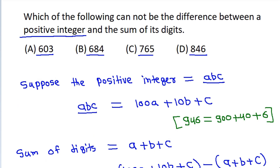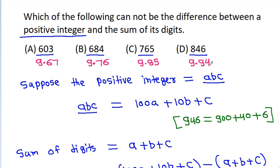Now if we check the options: 603 is 9 times 67, and 684 is 9 times 76. And 765 is 9 times 85, and 846 is 9 times 94.